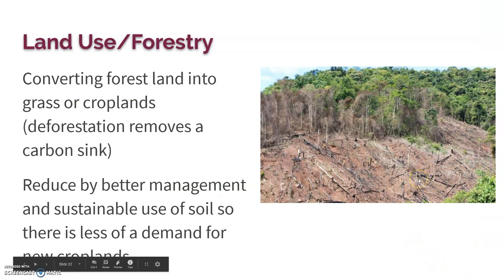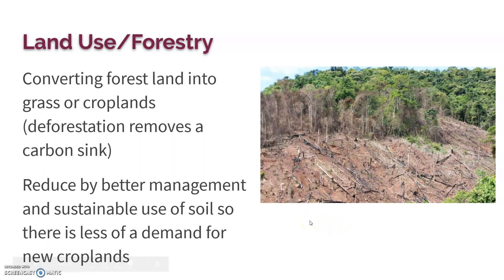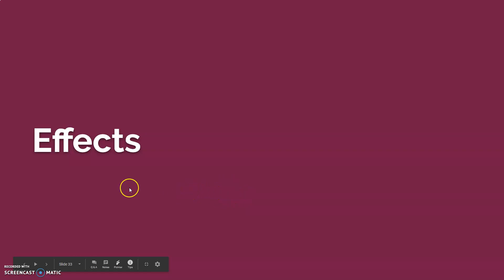With land use, conversion of forest land to grassland or cropland removes a major carbon sink — we're producing more CO₂ while eliminating what would absorb and store it. We can reduce this through better land management and sustainable soil use, so there's less demand for new croplands. If you take good care of the soil, you don't have to cut down trees and burn them to create new cropland.